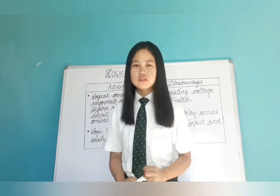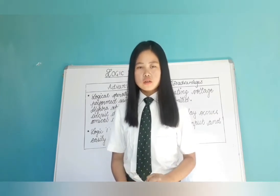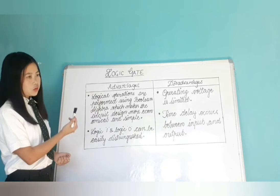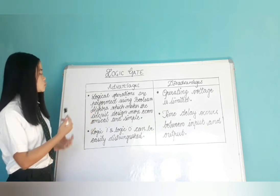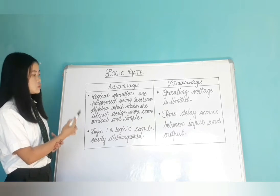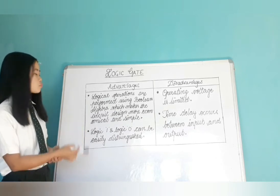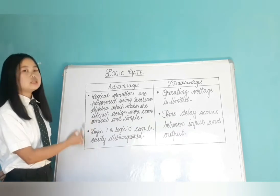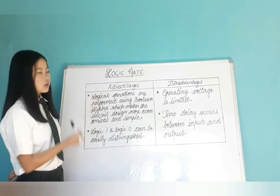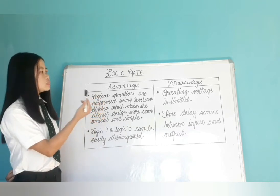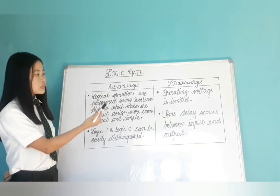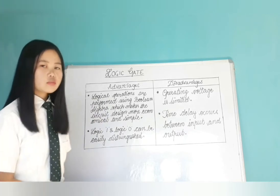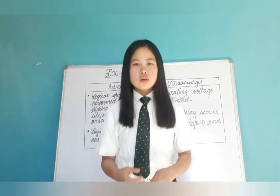Now, we will see advantages and disadvantages of logic gates. Advantages: number one, logical operations are performed using Boolean algebra, which makes the circuit design more economical and simple. Number two, logic 1 and logic 0 can be easily distinguished. Disadvantages: number one, operating voltage is limited. Number two, time delay occurs between input and output.